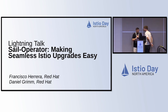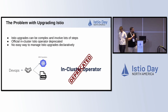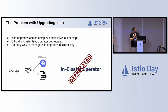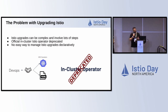We are going to be talking about this new project that we are working on. The main problems with upgrading Istio right now: upgrades can be really complex and involve a lot of manual steps, especially when running large clusters with a lot of services and complex configuration.